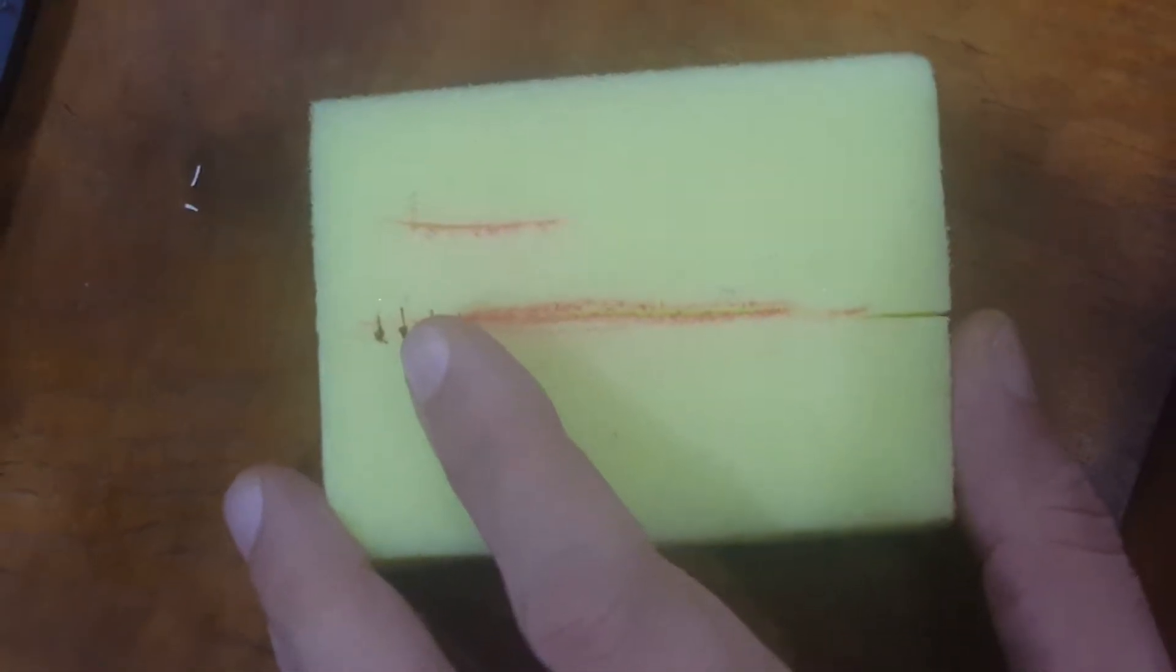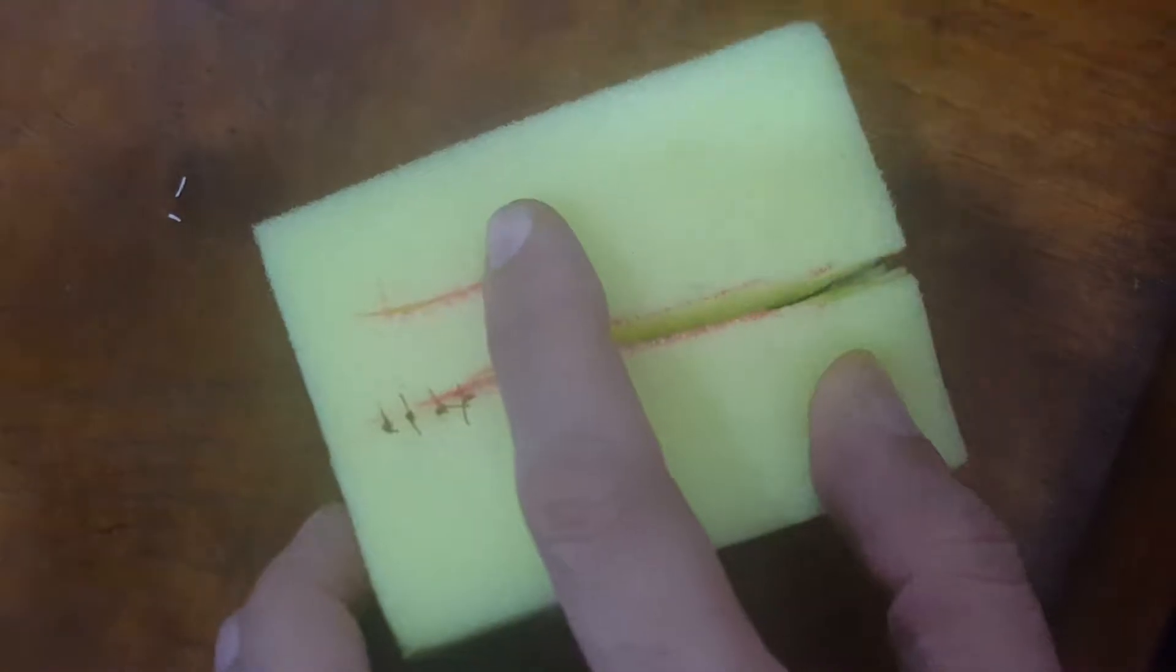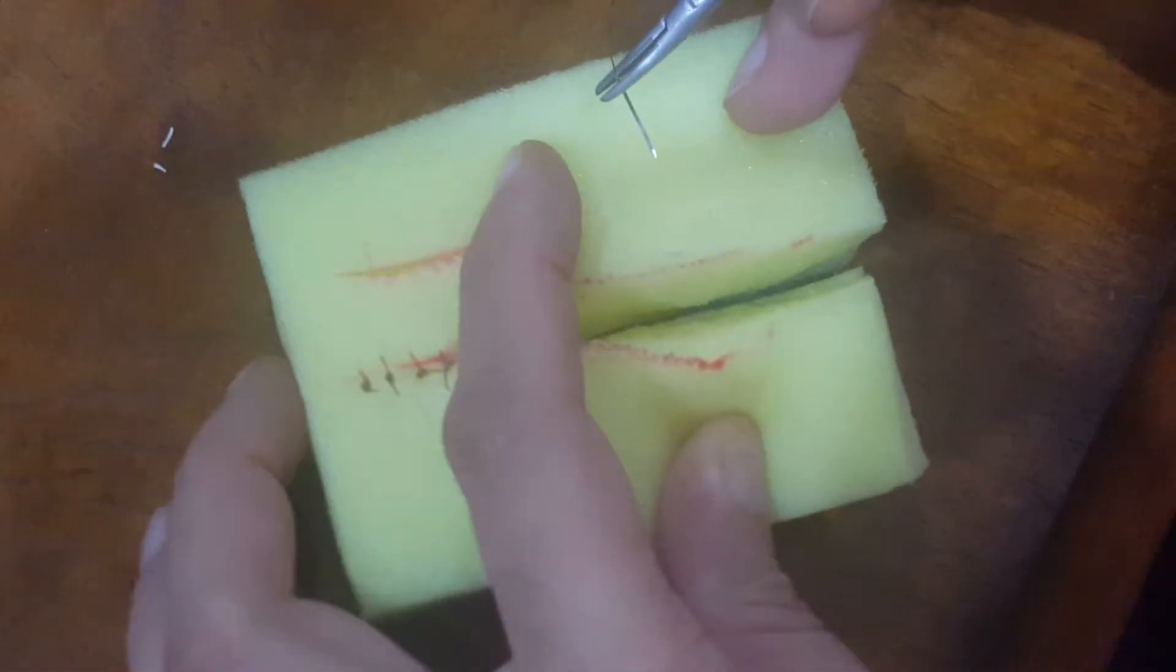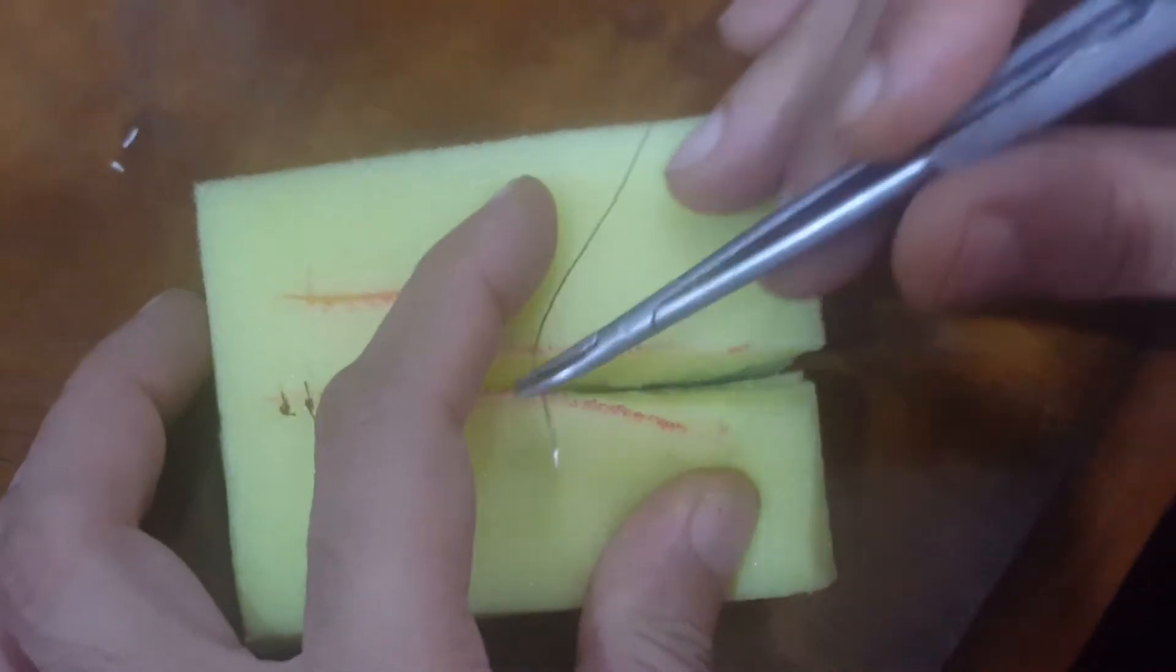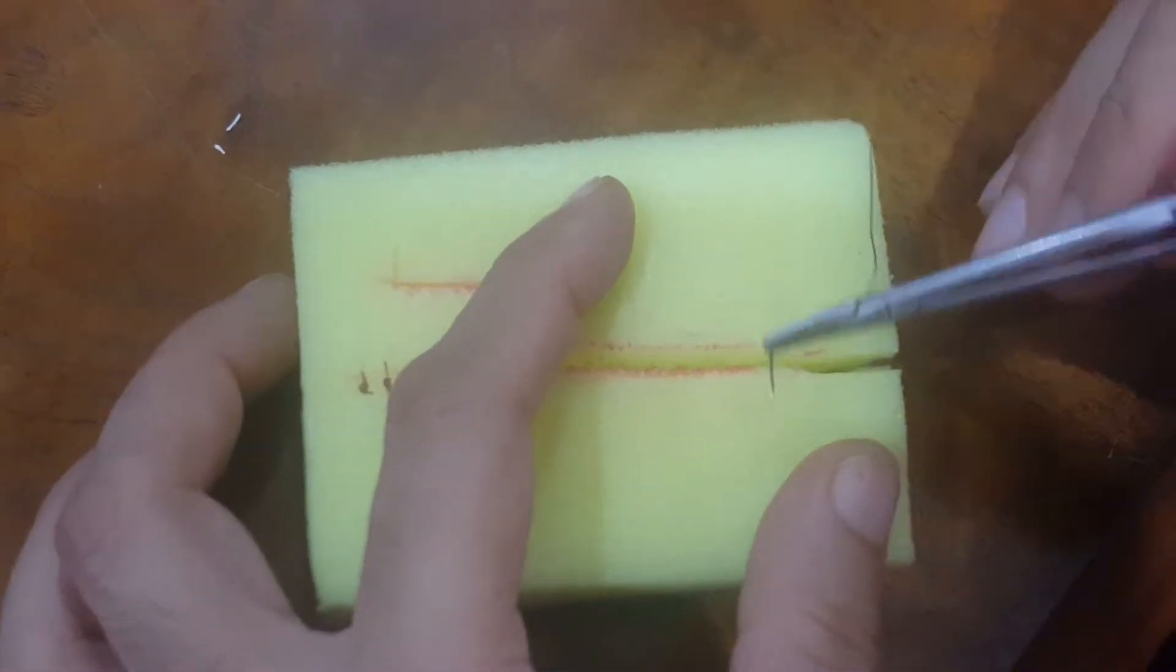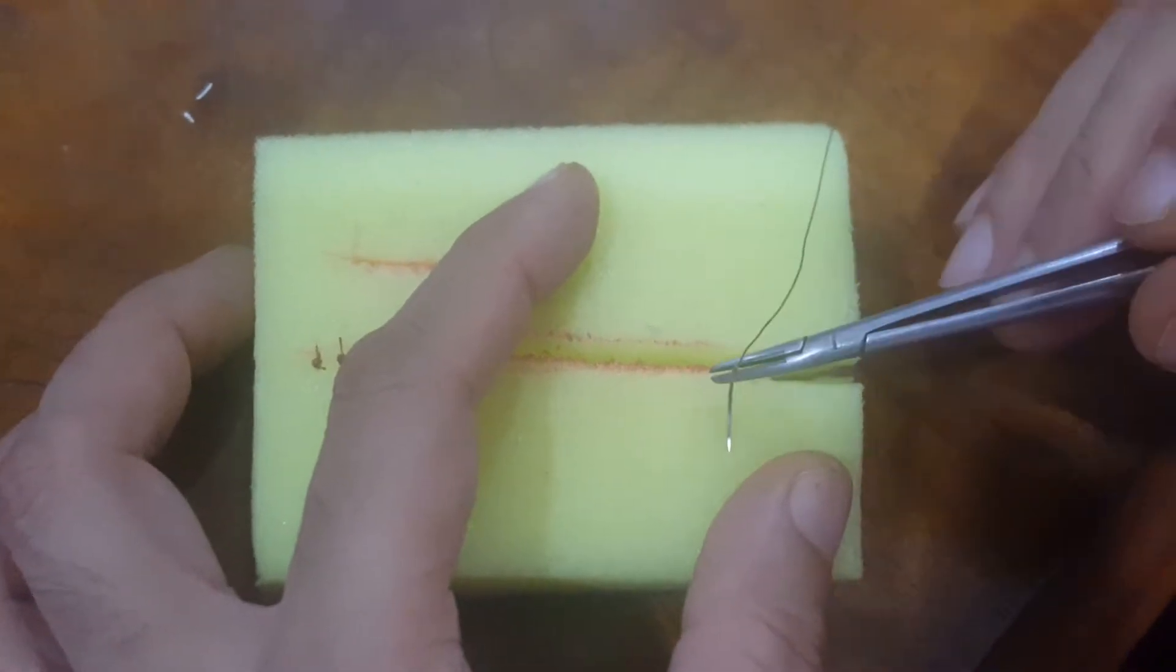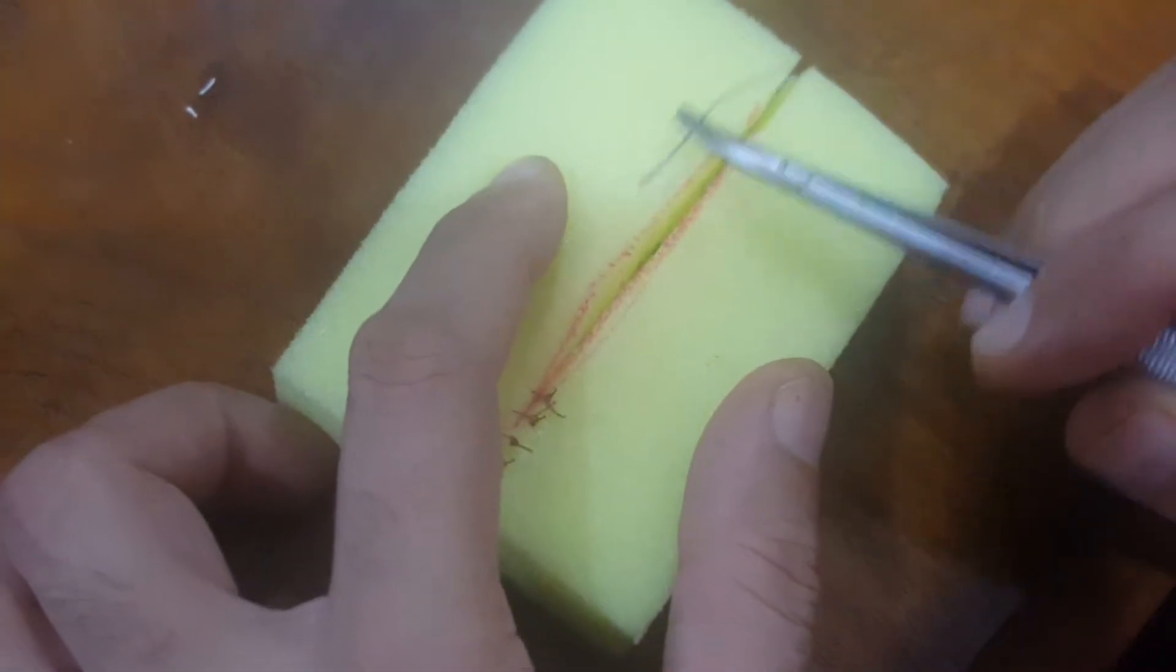Okay, here we're going to practice doing some mattress sutures. Mattress sutures are sometimes called horizontal and vertical mattress. I like to call them according to the incision that you're trying to close, so if you take the incision into account, either you're going perpendicular to it or you're going parallel to it.